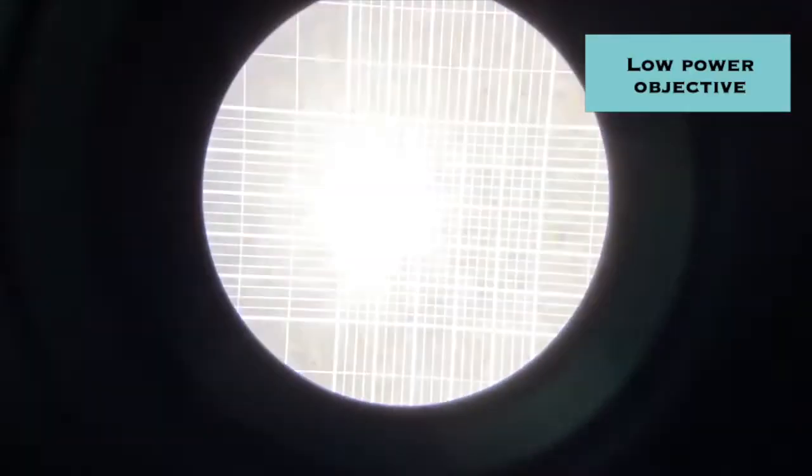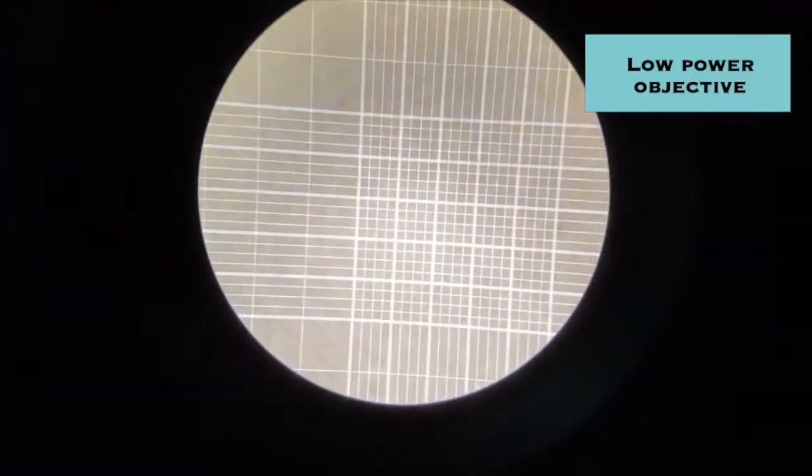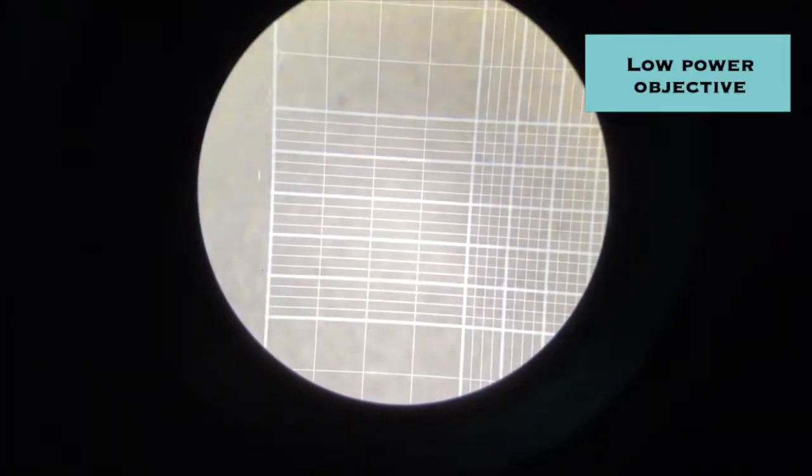Now switching to the low power objective, you can see the large central square, and each of the four corner large squares.